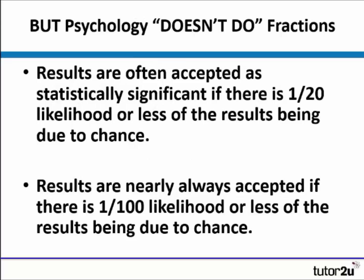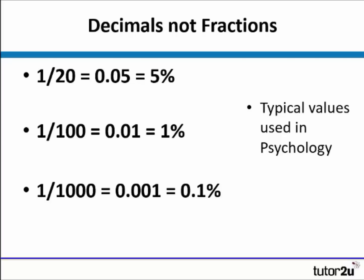In psychology, we don't tend to use fractions — instead, we use probability as decimals and percentages. We would often accept results if there's a 1 in 20 likelihood or less of the results being due to chance, and they are nearly always accepted if there's only a 1 in 100 likelihood. The typical figures you'll see in inferential statistics are 0.05, 0.01, and 0.001 — which are 5%, 1%, and 0.1% respectively. If you have a result which is only 0.1% due to chance, that's a pretty good finding.